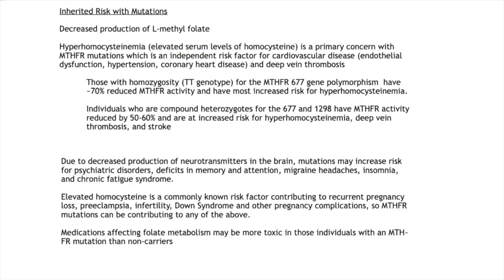Regarding increased risk with mutations: some of the increased risks include decreased production of L-methylfolate and hyperhomocysteinemia, or elevated serum levels of homocysteine. This is a primary concern with MTHFR mutations because it's an independent risk factor for cardiovascular disease due to endothelial dysfunction, hypertension, coronary heart disease, and deep vein thrombosis. Those with homozygosity — the T/T genotype for MTHFR 677 — have a 70% reduced MTHFR activity and the most increased risk for hyperhomocysteinemia. Individuals who are compound heterozygotes for 677 and 1298 have a 50–60% increased risk for hyperhomocysteinemia, deep vein thrombosis, and stroke.